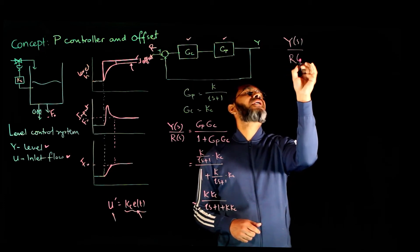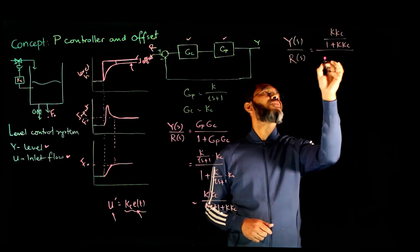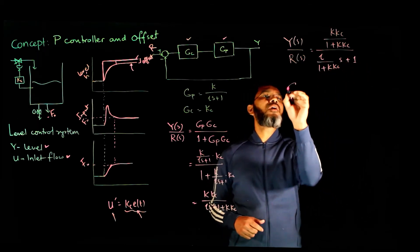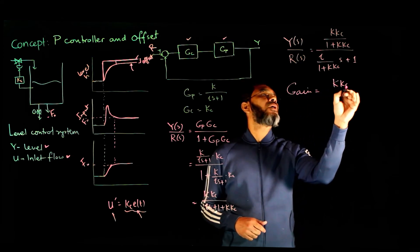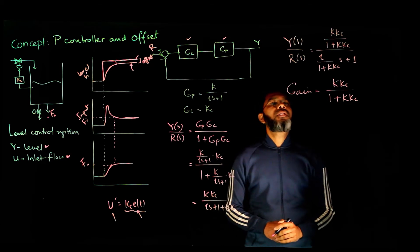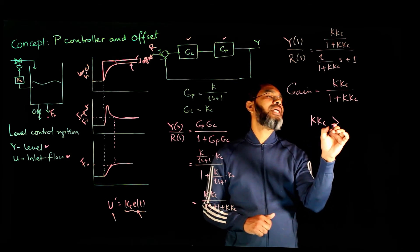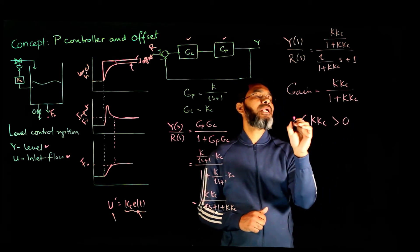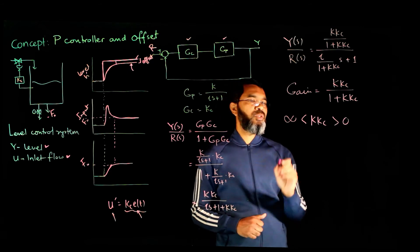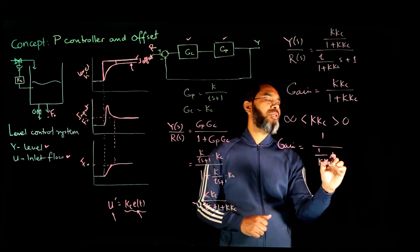Simplifying, the closed-loop transfer function becomes KKc over (tau·s + 1 + KKc). Standardizing gives KKc over (1 + KKc) in the numerator, with the time constant adjusted accordingly. The gain of this closed-loop transfer function is KKc over (1 + KKc), which can be rewritten as 1 over (1/(KKc) + 1), and this is always less than 1.